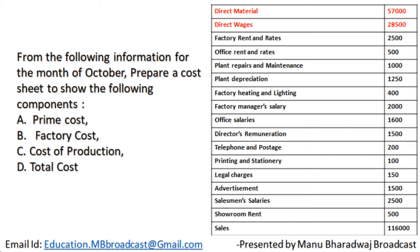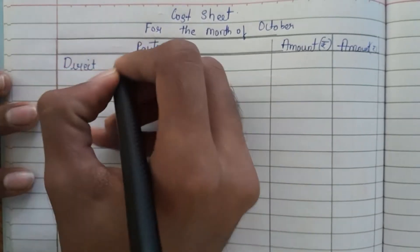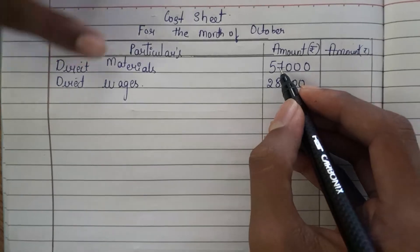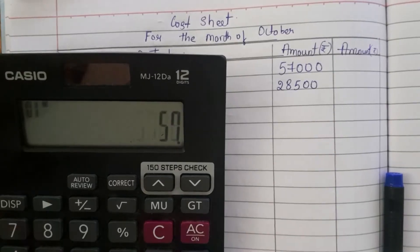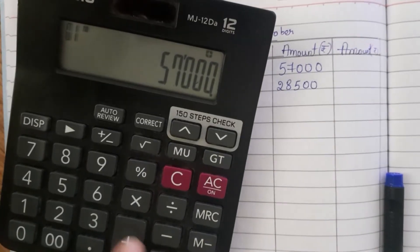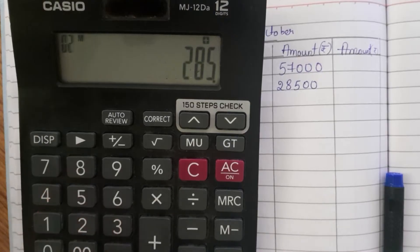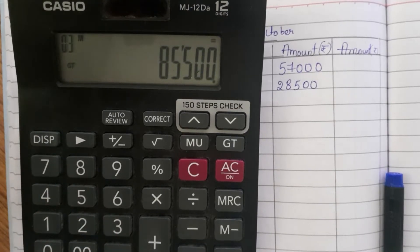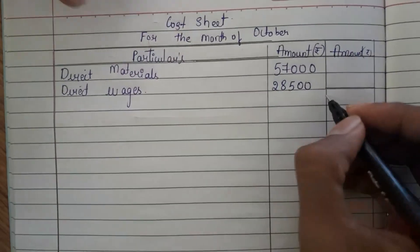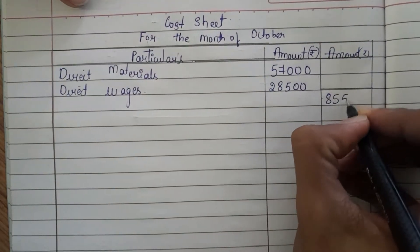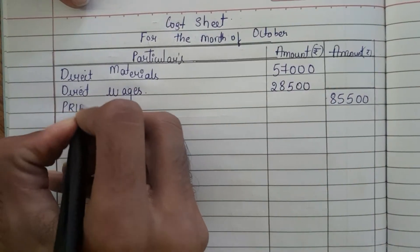In the question they have given direct materials 57,000 and direct wages 28,500. So direct materials is 57,000 and direct wages is 28,500. When you add these, you will get 85,500. So this 85,500 — what is this? This is the prime cost.